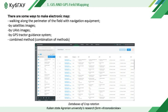There are several ways to make an electronic map: walking along the perimeter of the field with navigation equipment, by satellite images or by drone images, by GPS tractor guidance system, or a combined method. An electronic field map is created once and regularly updated. The key advantage of an electronic map over a paper map is that each of its objects is completely autonomous — it can be edited separately from other objects and a wide range of characteristics can be attached to each of them.